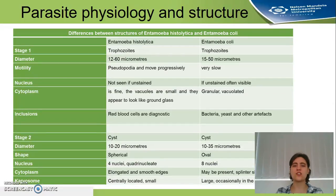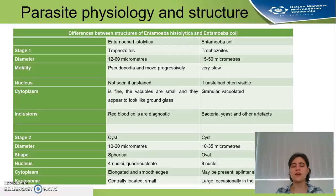The parasite structure is divided into two forms: trophozoites or cysts. The trophozoite of Entamoeba histolytica is 12 to 16 micrometers. It has pseudopodia. The cytoplasm is finely vacuolated and looks like fine ground glass, and the diagnostic inclusion is red blood cells. The Entamoeba coli trophozoite is 15 to 50 micrometers, moves very slowly, and the cytoplasm is granular and vacuolated, with inclusions of bacteria, yeast, and other artifacts that are not diagnostic of that parasite.